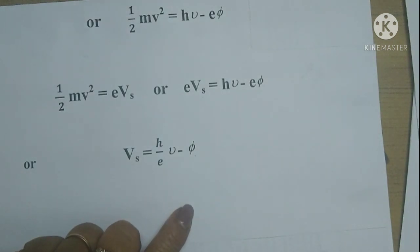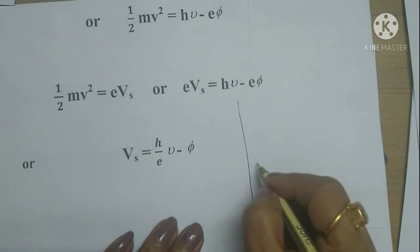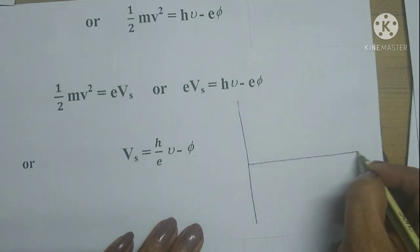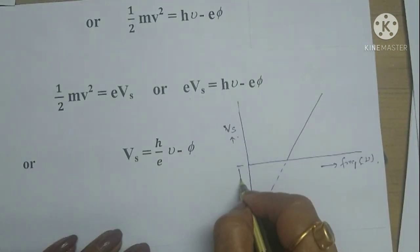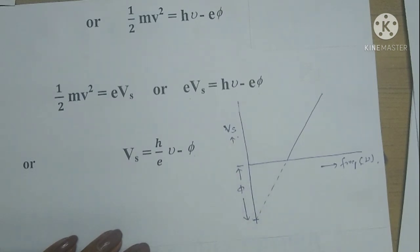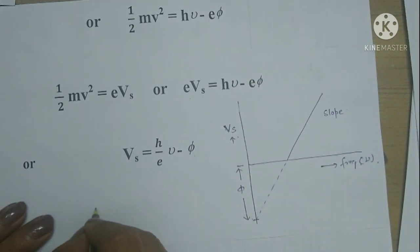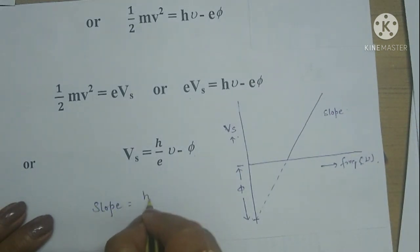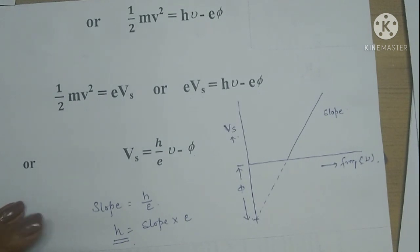This is a straight-line equation, so if we draw a graph of Vs (stopping potential) versus frequency ν, it should be a straight line as suggested by the equation. The line will intersect the x-axis at the threshold frequency, and if extended, will have an intercept on the y-axis in the negative direction representing the work function φ. The slope of the line equals h/e, so Planck's constant h can be calculated as slope × e.